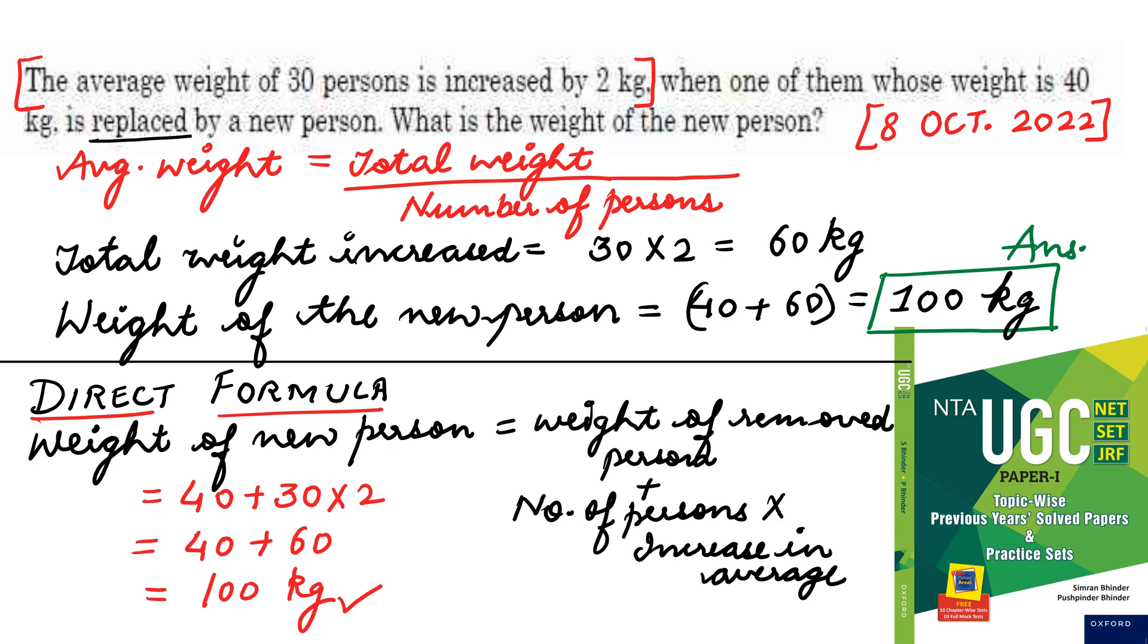So, one way is to calculate in this manner. There is another way, there is also a direct formula which you can prepare. If next time in your UGC net exam this type of question comes, then by applying this direct formula quickly, you can find your answer. So, the direct formula is - weight of new person is equal to weight of removed person plus number of persons into increase in average. So, weight of removed person 40 plus number of persons 30 into increase in average 2. You can directly apply this formula and calculate the weight of the new person as 100 kg. I hope you have understood this, so you must prepare this type of questions for your UGC net exam.